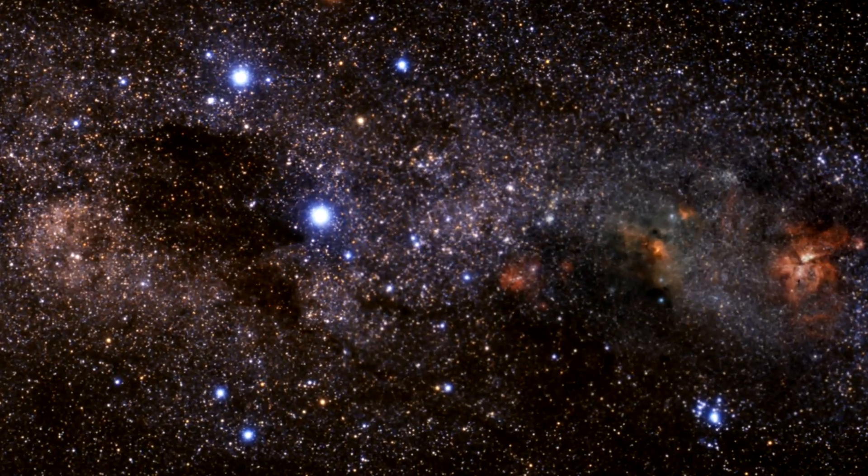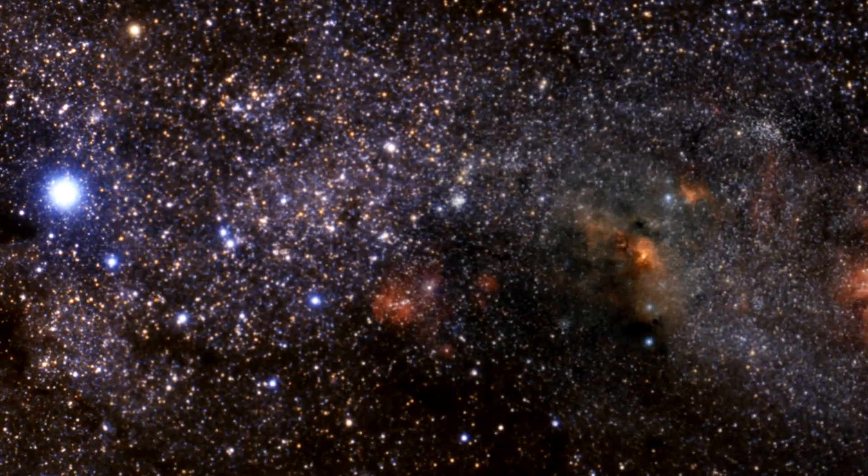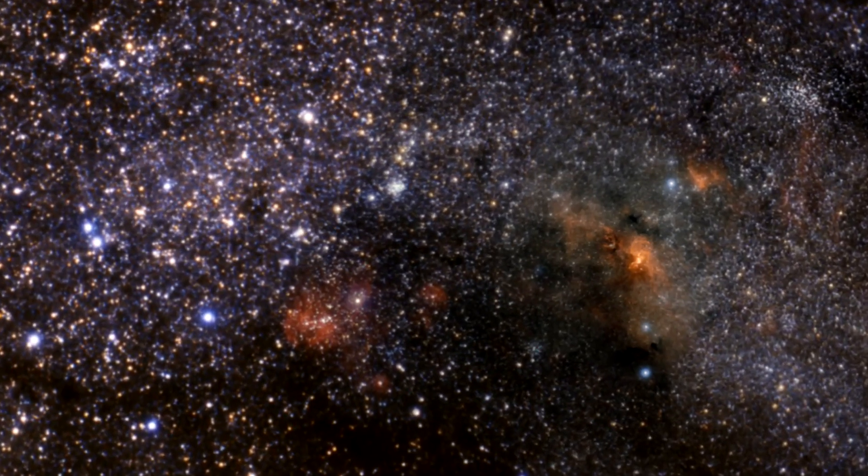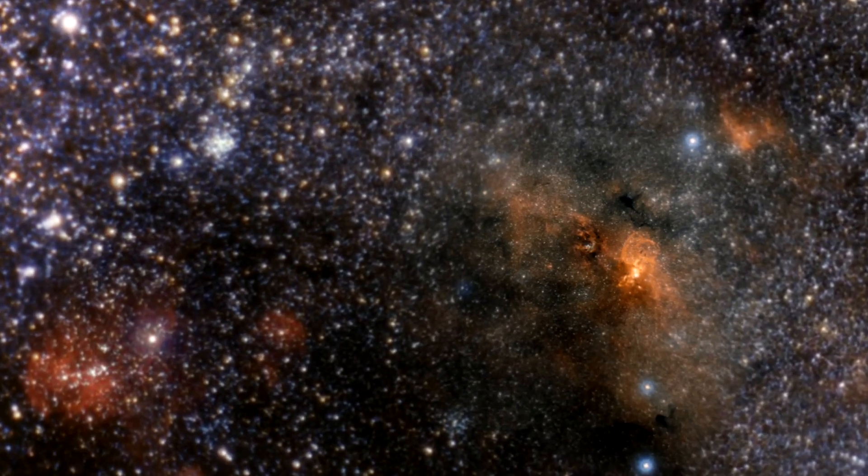A team of astronomers was able to use the Hubble Space Telescope to peer into the heart of a star-forming region which was first observed in 1834 by Sir John Herschel, the son of the world-renowned astronomer Sir William Herschel.